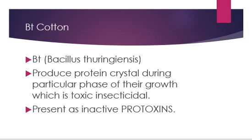In BT cotton, BT stands for Bacillus thuringiensis, which is a kind of toxin present in bacteria. It is isolated from bacteria and integrated with plant cells — ushe bacteria se nikaal ke plant cell mein bheja gaya jisse ki ushe hum genetically modified bana sakein. Pahle jo cheezein thi which were affecting the growth of cotton, causing different kinds of disease, or which were eating it — those insects — ab un insect se protection mil chuki hai. Now BT cotton is insect resistant as well as pest resistant.